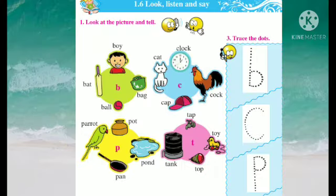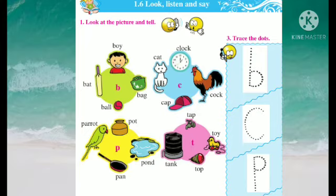Now let's see lesson number 1.6: Look, listen and say. Manje is kaya? Tar tum mala chitre dilil aahet — ti bagai chi ahet. Tenchi naave ai kaichi ahet, ani teya chitra nchi naave tum mala parat manai chi ahet. So let's see the first part: look at the picture and tell. Manje is picture bagun tenchi naave sanga.